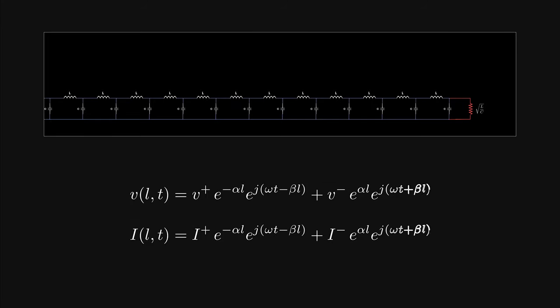That reflection is governed by the backward traveling wave in the solution of the voltage and current wave equations. We will talk about reflections in more detail, but for now let's assume the line is infinitely long, so the signal never reaches the load — there is only a forward wave and no backward or reflected wave. Let's see what happens to the signal while traveling through the line before reaching the load.